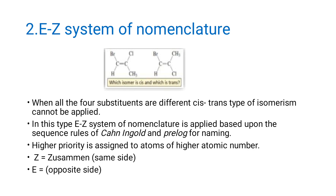The second system is the E-Z nomenclature of geometrical isomers. This is applied when all four substituents are different, because cis-trans type of isomerism cannot be applied in that situation. The E-Z system is based on the sequence rules of Cahn, Ingold, and Prelog for naming, which we have already discussed in optical isomerism.